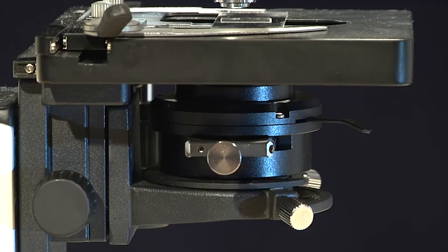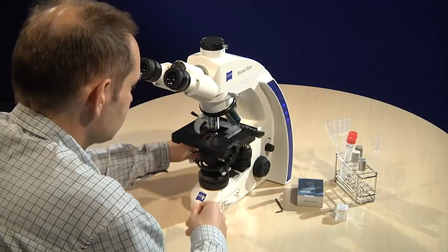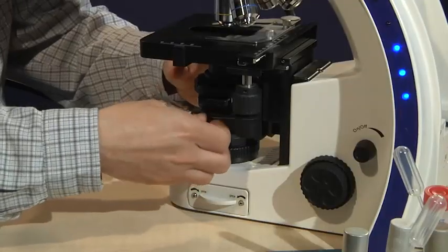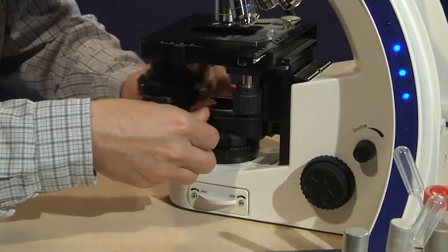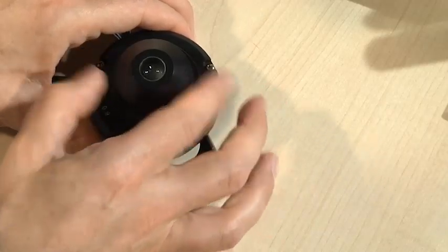The condenser focuses light from the light source and illuminates the specimen with uniform intensity over the entire view field. In addition to the objective, quality and adjustment of the condenser is essential for the optical resolution of the microscope.